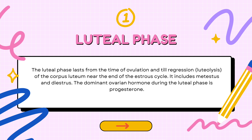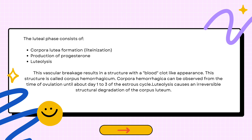The luteal phase lasts from the time of ovulation until regression and luteolysis of the corpus luteum near the end of the estrous cycle. It includes metestrus and diestrus. The dominant ovarian hormone during the luteal phase is progesterone. The luteal phase consists of corpus luteal formation or luteinization, production of progesterone, and luteolysis.